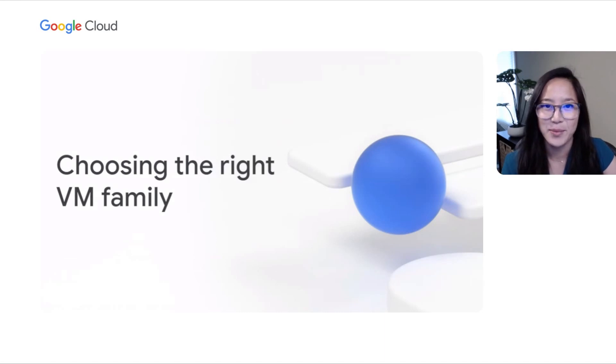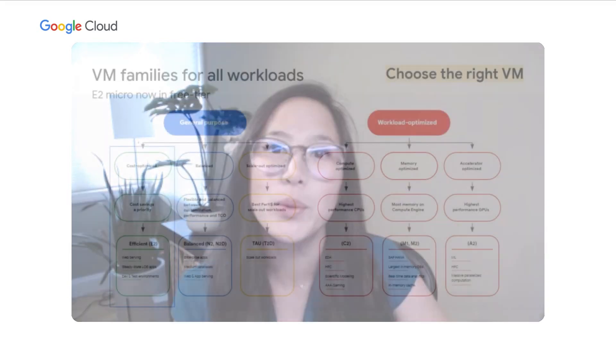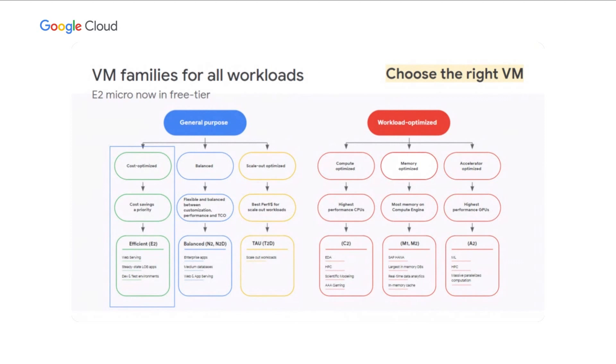We have hundreds of predefined machines and customizable options for your workloads. One major part of optimizing costs is choosing the right VM family. As of September 1st, the free tier will only include the E2 micro, which offers more CPU and RAM than the previous F1 micro free tier VM. E2s are our lowest priced general purpose VMs, with up to 31% savings compared to N1.